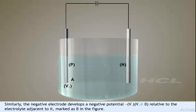Similarly, the negative electrode develops a negative potential minus V minus, V minus greater than or equal to zero, relative to the electrolyte adjacent to it, marked as B in the figure.